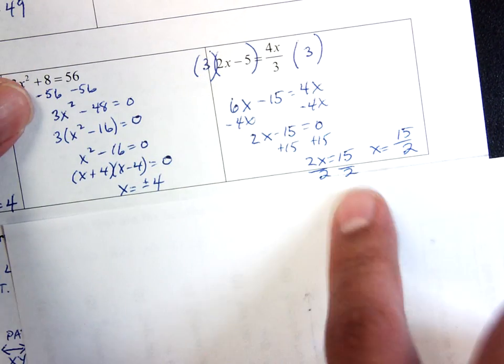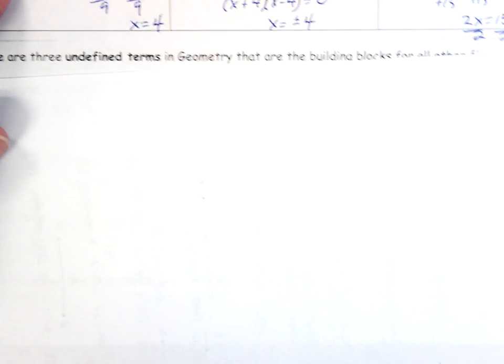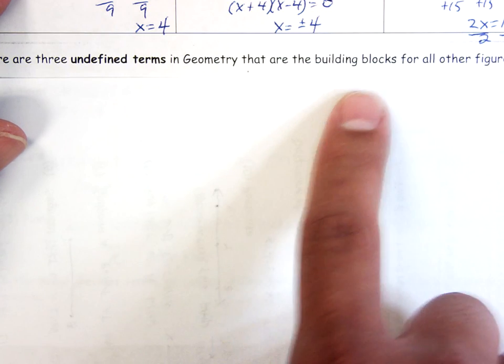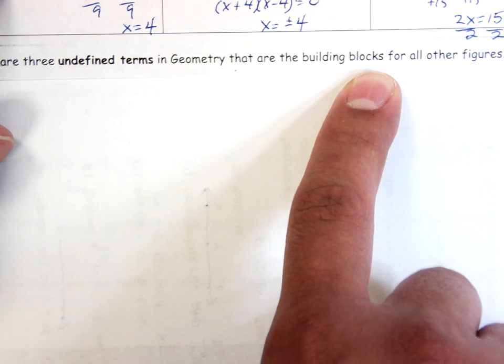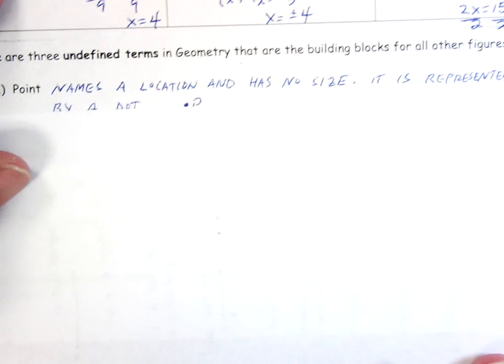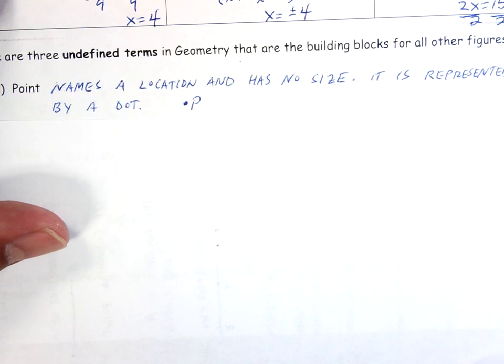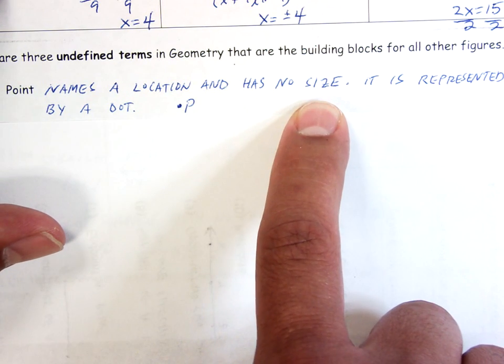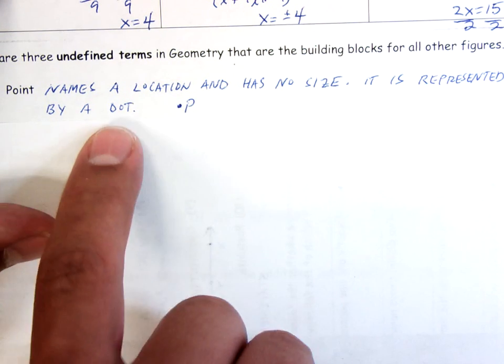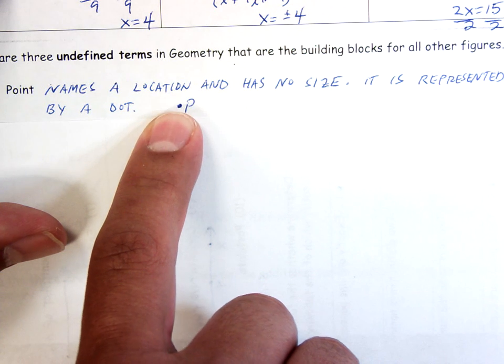Fractions are much better than decimal, just leave it as a fraction. Alright, new stuff. There are 3 undefined terms in a geometry class. As it says, they are the building blocks for all the other figures we're going to talk about. The first one is called a point. A point, it names a location and it has no size, it is represented by a dot. For example, that's a point, that's talking about point P.